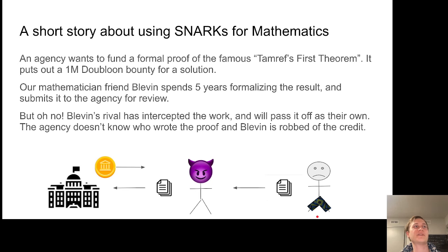But oh no, there's actually a rival of Blevins who intercepts the proof and is going to pass it off as their own. The agency doesn't know who wrote the proof initially, and Blevins is going to be robbed of all the credit. What a tragedy. So the question that this talk addresses is a way that this unfortunate scenario can be prevented with a form of cryptography called a SNARK.